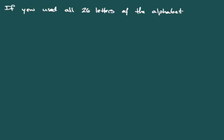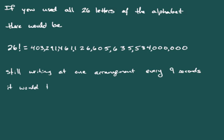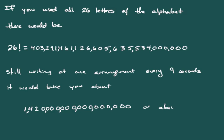And if we wanted to write out all 26 letters of the alphabet, 26 factorial is a really big number. Writing one arrangement of all 26 letters in nine seconds, it would take about one and a half quintillion years to write out all possible arrangements of A through Z. These numbers grow really quickly when you start counting arrangements of things.